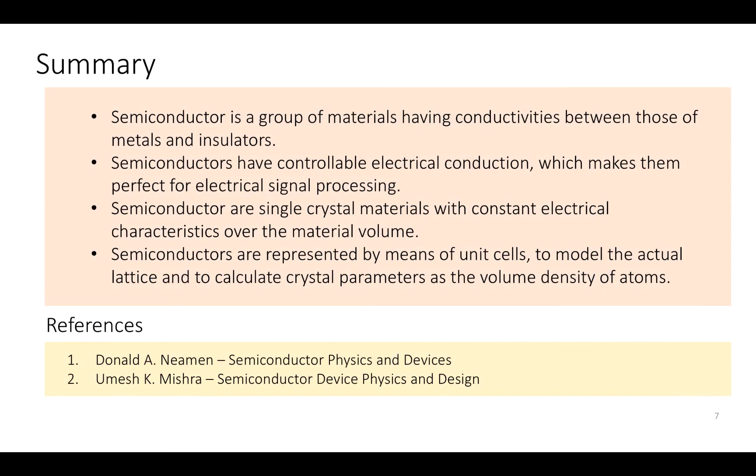So what have we learned? First, semiconductors are a group of materials having conductivities between those of metals and insulators. Second, semiconductors have controllable electrical conduction, which makes them perfect for electrical signal processing. Third, semiconductors are single crystal materials with constant electrical characteristics over the whole material volume. And finally, semiconductors are represented by means of unit cells to model the actual lattice and to calculate crystal parameters such as the volume density of atoms.